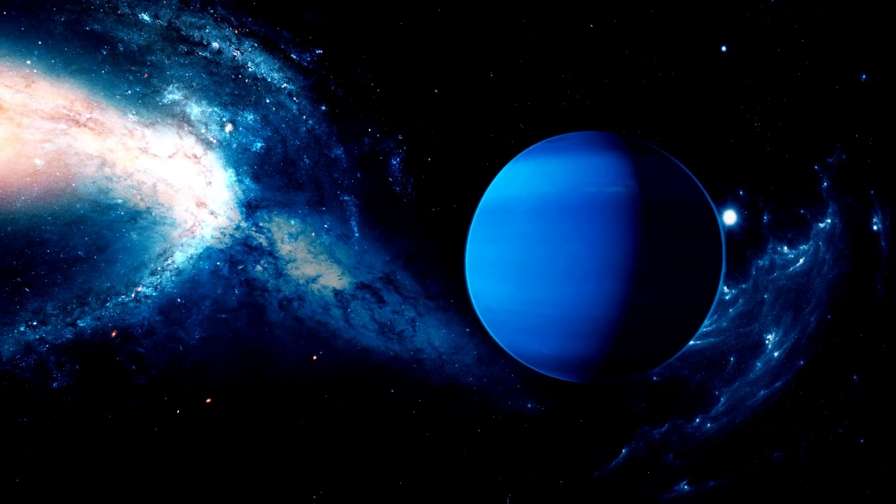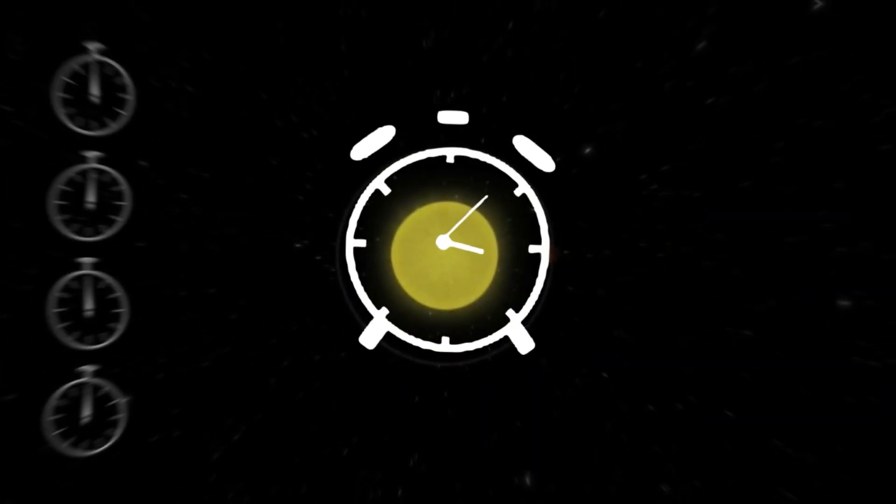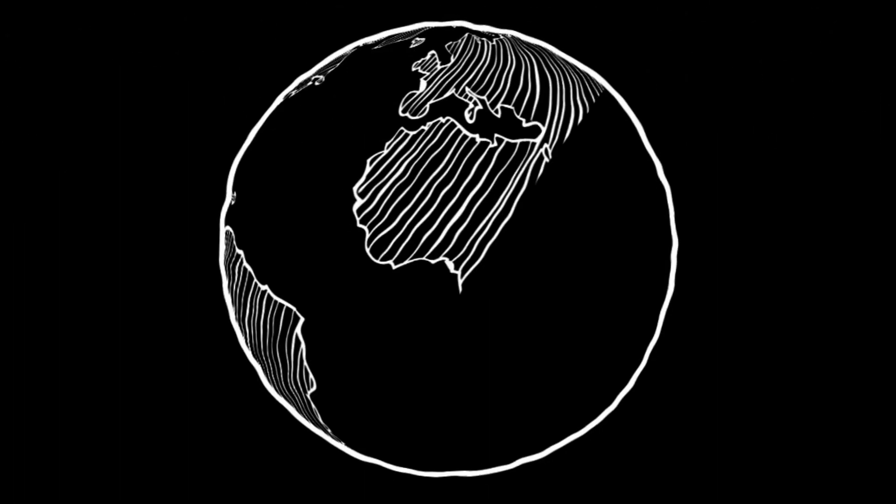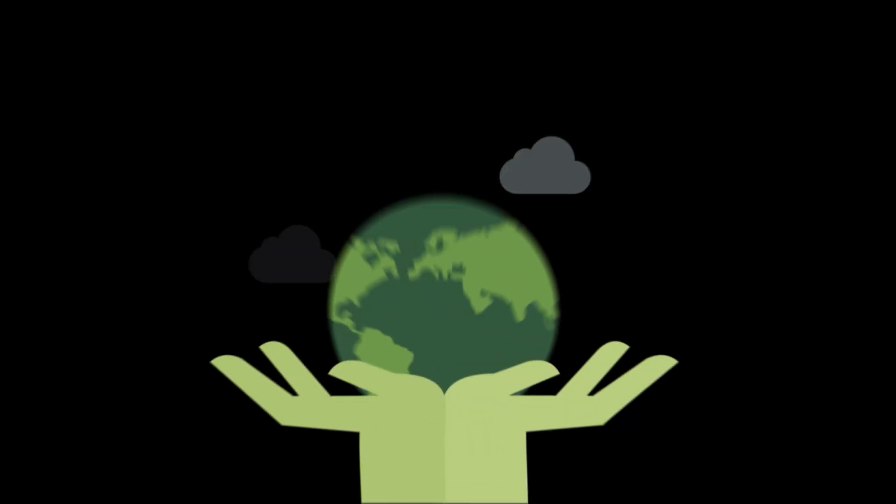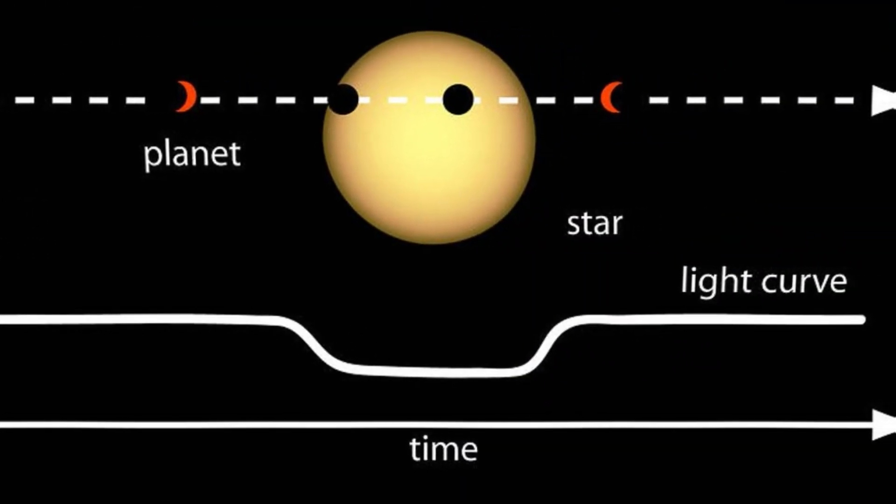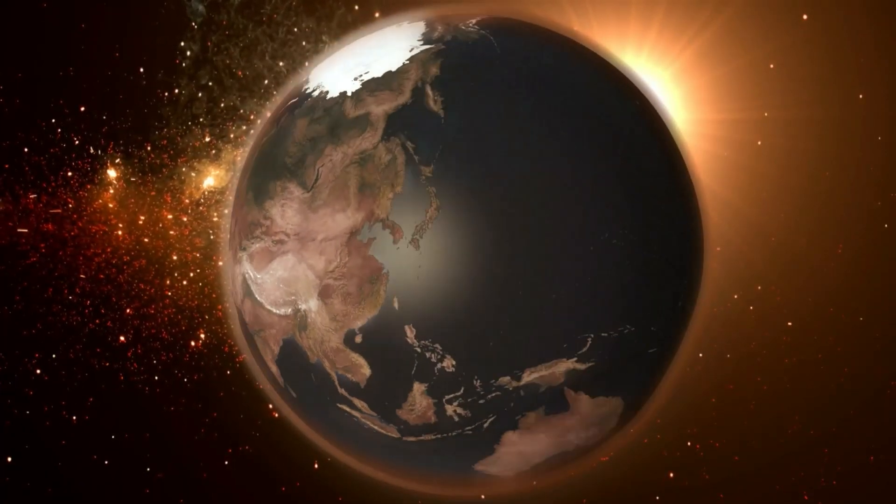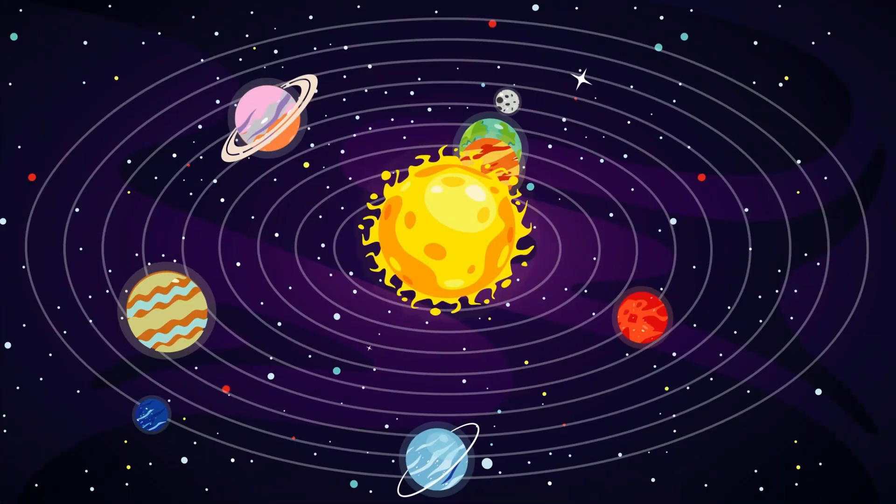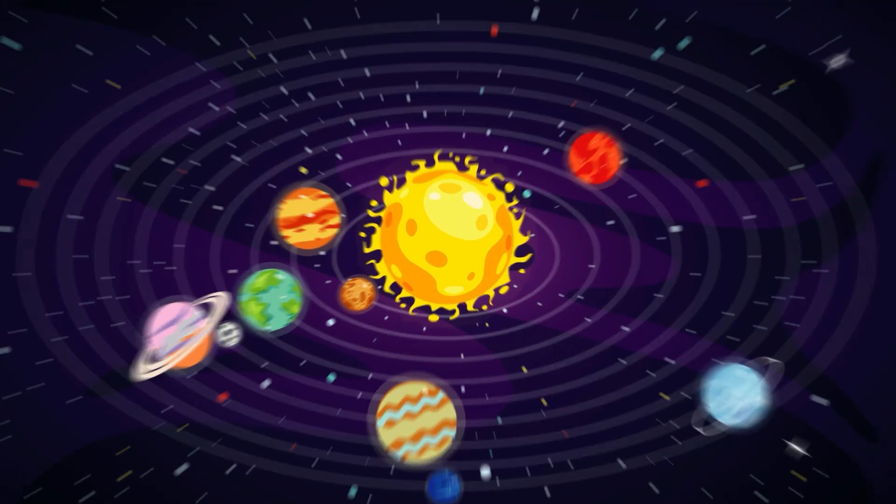Kepler-725c is important for several reasons. One, TTV Discovery Method. This is the first super-Earth discovered in a habitable zone using the transit timing variation method. TTV is particularly valuable in detecting planets that don't transit their star directly from our line of sight, revealing hidden members of planetary systems.